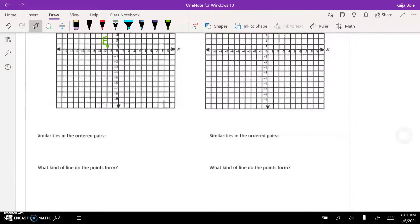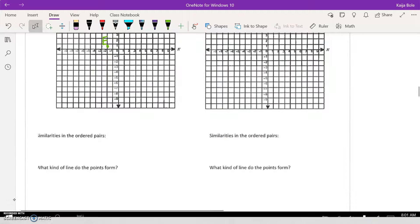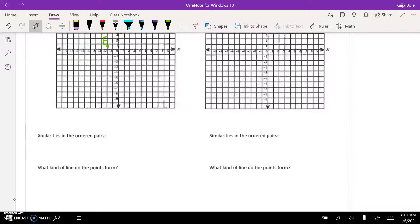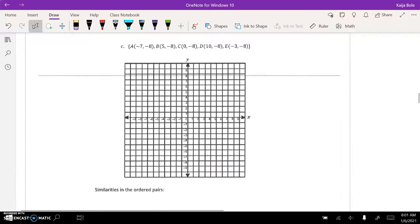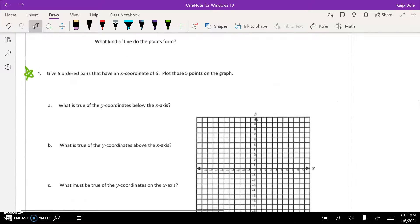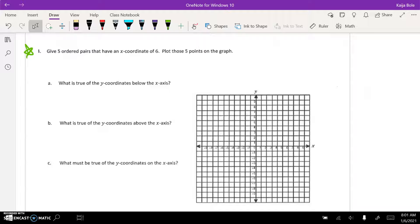And then, you know, similarities in the ordered pairs, differences, what kind of a line do they form? You know, is it a straight line, is it horizontal, is it vertical? That's that question. And then same thing at the top.